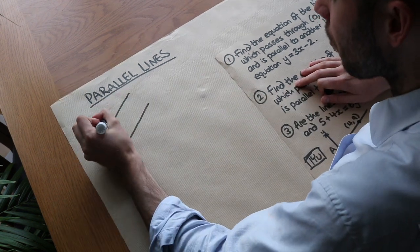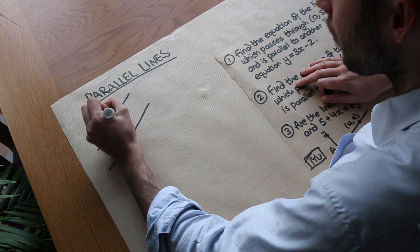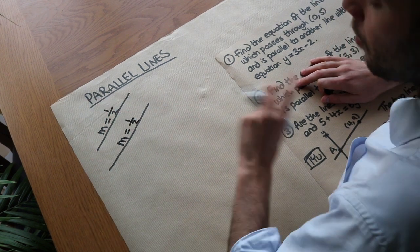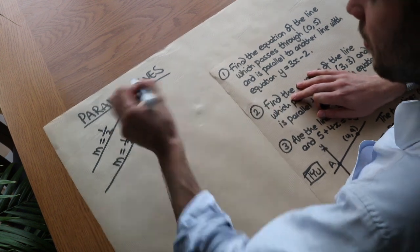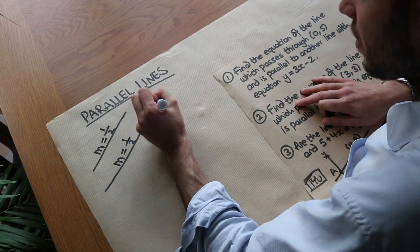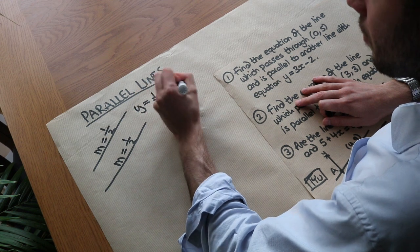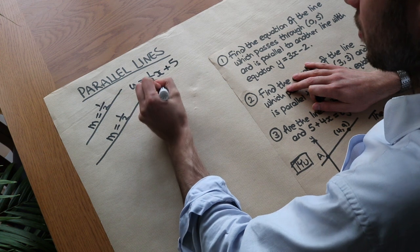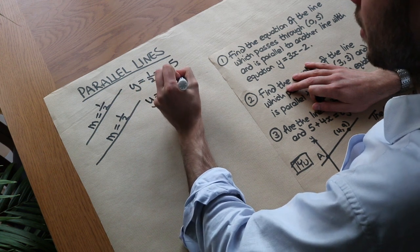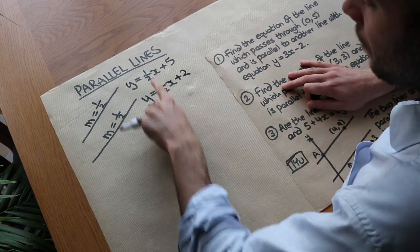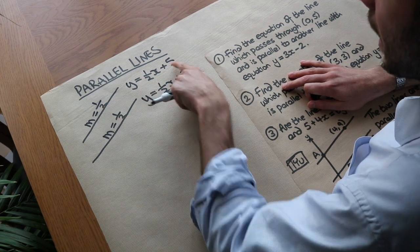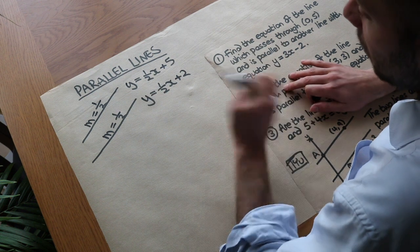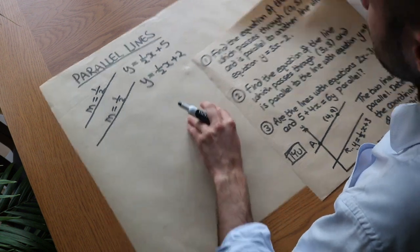So for example, if that gradient m was a half, then the gradient of this line would also be a half. They might have different y-intercepts, so it could be that one equation is y equals a half x plus 5, but the other has a different y-intercept, so it might be y equals a half x plus 2. So they have the same gradient — the same m-value — but different y-intercepts. And that's really the only principle we're going to be exploring in this video. So let's look at a few examples.